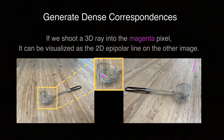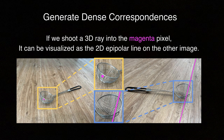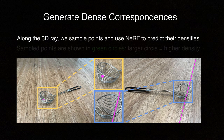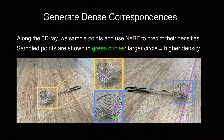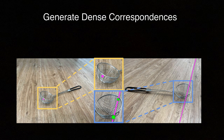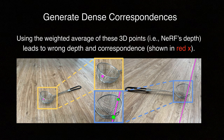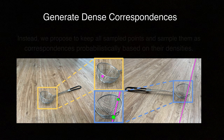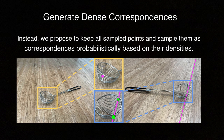If we shoot a 3D ray into the magenta pixel, it can be visualized as the 2D epipolar line on the other image. Along the 3D ray, we sample points and use NeRF to predict their densities. Sample points are shown in green circles — the larger the circle, the higher the predicted density. A naive strategy is to use the weighted average of these 3D points based on their densities to derive dense correspondence. However, we show that this strategy leads to the wrong correspondence, visualized as the red cross. To avoid this issue, we propose to keep all sample points and sample them as correspondence probabilistically based on their densities.